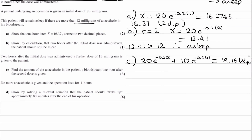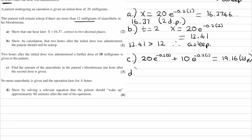On to part D. No more anaesthetic is given, and the operation lasts for four hours. Show by solving a relevant equation that the patient should wake up. Wake up means x is equal to 12 — however much anaesthetic is in the patient should equal 12 at the instant they wake up. That wake-up time should be about 80 minutes after the end of the operation. The hint is to try and form some kind of equation.